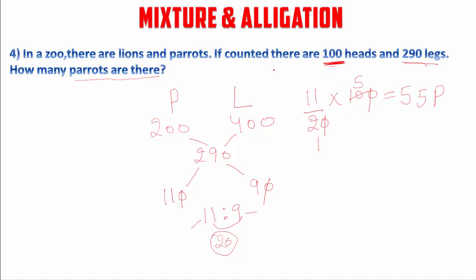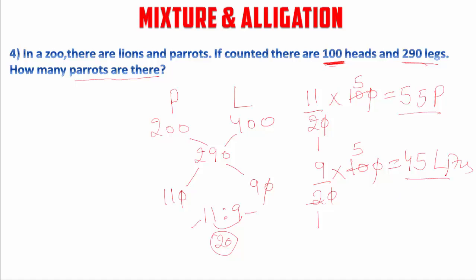We can also calculate the lions: 9 out of 20, times 100, gives 45 lions. So there are 55 parrots and 45 lions. That is our answer. You can see 290 is greater than 200 and less than 400. That's it for this video — we will discuss some more questions on this topic in my next part. Thanks for watching.